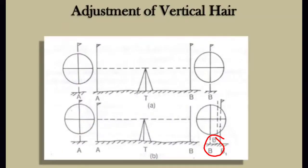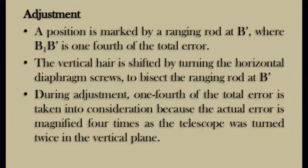During this adjustment, we will take 1/4 of the total error. That means we will shift the vertical hair by turning the horizontal diaphragm screw. The actual error is magnified 4 times because the telescope is turned twice, so the total error must be divided by 4 and that 1/4 of the total error is corrected.